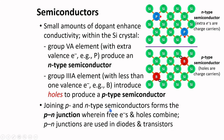Joining the p-type and n-type semiconductors forms the p-n junction, wherein free electrons and holes combine. P-n junctions are used in diodes and transistors.